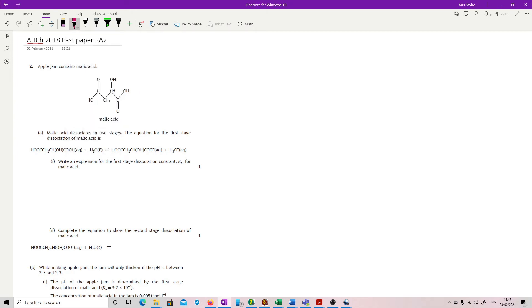Question 2. Apple jam contains malic acid and we've got two carboxylic acids on this structural formula. That's important because it then tells you it dissociates in two stages. The equation for the first stage is shown. That's a normal dissociation you'd expect to see. Give an expression for the first stage dissociation constant Ka.